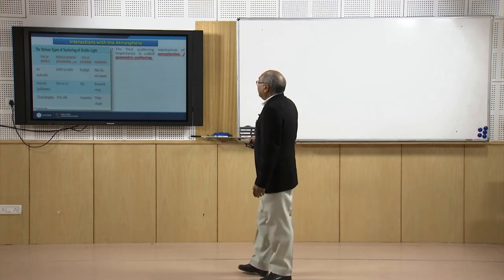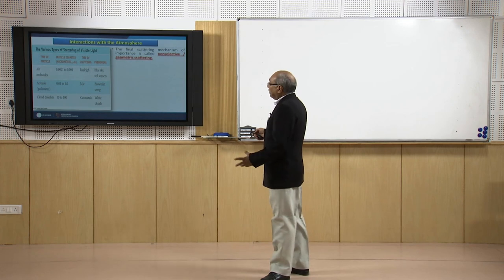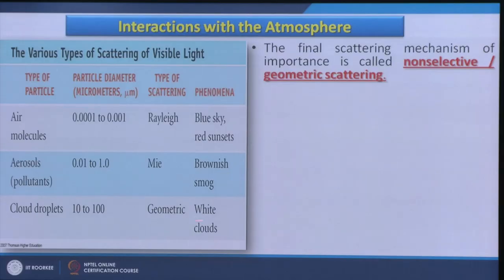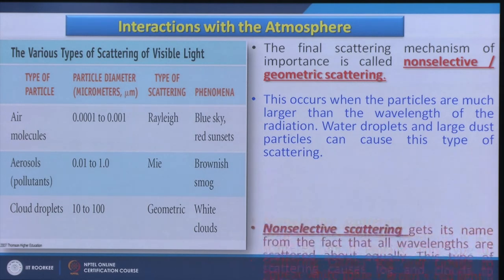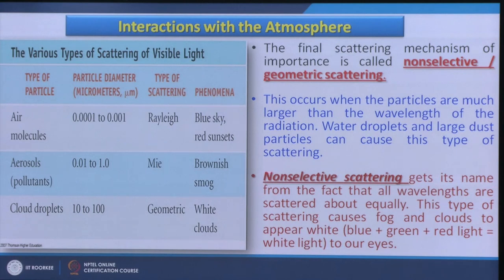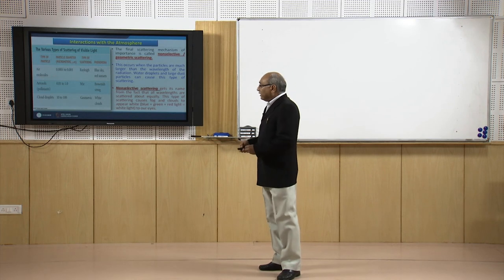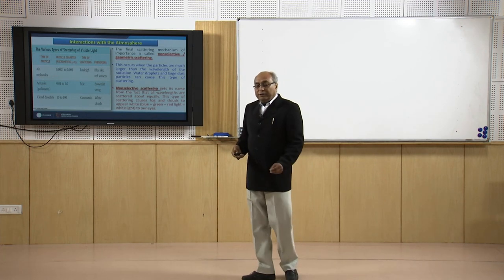The final scattering mechanism is geometric or non-selective scattering. This occurs when particles are much larger than the wavelength of the radiation; water droplets and larger dust particles can cause this type. The name comes from the fact that all wavelengths are scattered about equally. This scattering causes fog and clouds to appear as a combination of blue, green, red and ultimately white to our eyes. Once non-selective scattering occurs, visibility reduces further.